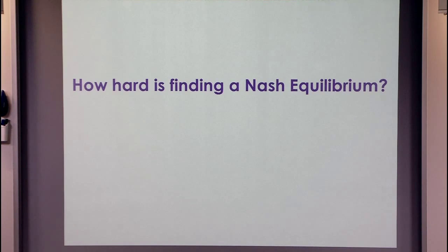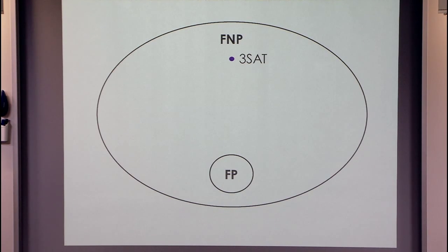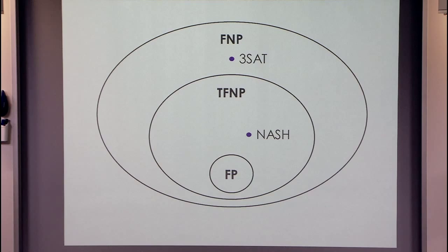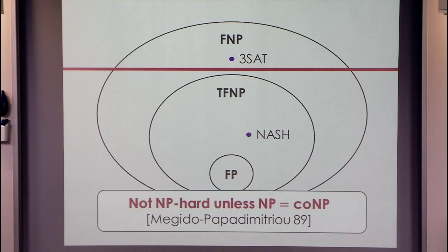Today we want to understand how hard it is to find a Nash equilibrium. We have the classes FP and FNP — just the functional versions of P and NP — containing search problems instead of decision problems. The problem Nash is contained in a subclass of FNP called TFNP, the class of total search problems, where for every instance there always exists at least one solution. Nash really is in TFNP exactly because of Nash's existence theorem. Papadimitriou showed that unless the polynomial hierarchy collapses, you cannot have a reduction from an NP-complete problem to a problem in TFNP, so we cannot hope to prove that Nash is NP-complete.